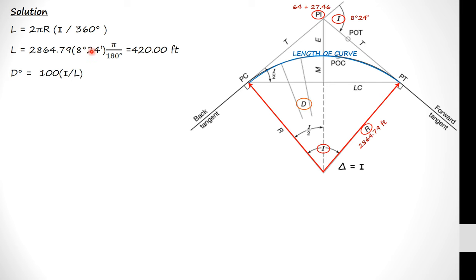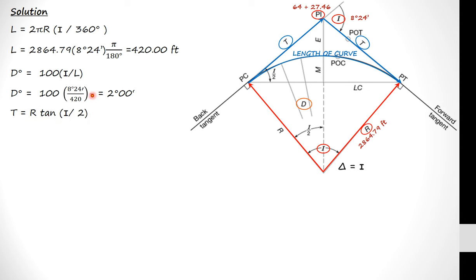The degree of curve is 100 divided by the intersection angle over the length of curve. We just found the length is 420 feet, so we take 100 times the intersection angle divided by 420 to get 2 degrees 0 minutes. Note that for this equation, I (the intersection angle) must be in degrees — sometimes also called delta or the internal angle. The tangent equals the radius times the tangent of 8 degrees 24 minutes divided by 2, giving a tangent length of 210.38 feet — the distance from PC to PI and from PI to PT.